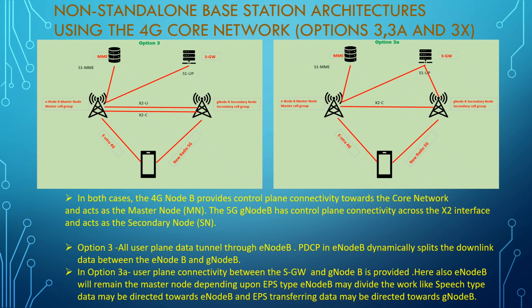In Option 3, all user plane data tunnels through the eNodeB only, and PDCP in the eNodeB dynamically splits the downlink data between the eNodeB and gNodeB. In Option 3a, the user connectivity between the signaling gateway and gNodeB is provided directly. The eNodeB remains the master node, and depending on the EPS bearer type, the eNodeB may direct data — for example, speech-type data goes to eNodeB and other EPS bearers transfer data toward the gNodeB.